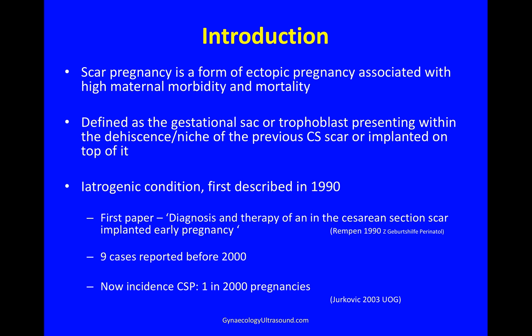A caesarean scar pregnancy is a form of ectopic pregnancy associated with high maternal morbidity and mortality. It is defined as the gestational sac or trophoblast presenting within the dehiscence or niche of the previous section scar, or implanted on top of it. This is an iatrogenic condition first described in 1990, and only 9 cases were reported before 2000 in the literature, but now the incidence is thought to be 1 in 2000 pregnancies.